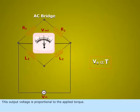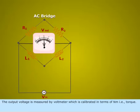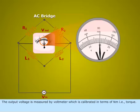This output voltage is proportional to the applied torque. The output voltage is measured by a voltmeter which is calibrated in terms of Nm, that is torque.